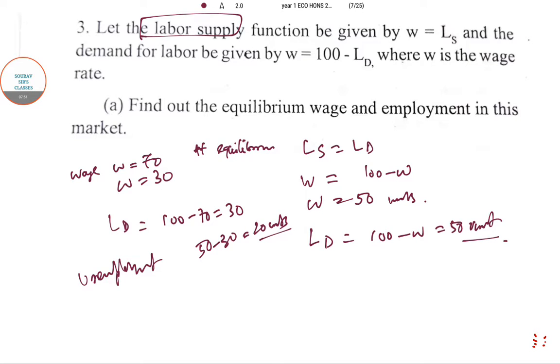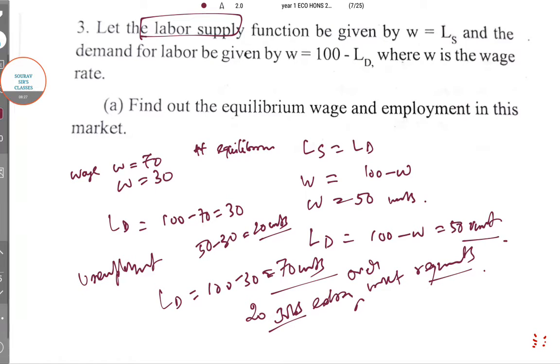In the second case where W = 30, labor demand will be high because of lower wage rate, that is 70 units. So there will be 20 jobs extra created, over market requirement. When wage rate falls below equilibrium there will be 20 new jobs, and if wage rate is above equilibrium there will be high unemployment in the market.